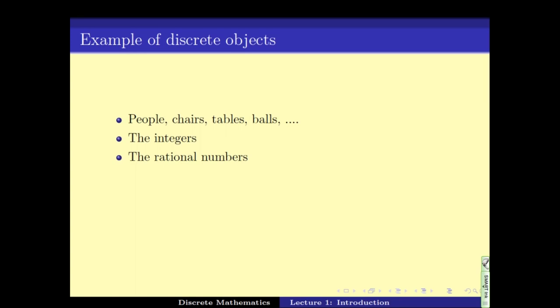The rational numbers, numbers like 2 by 3, 11 by 49, 23 by 108, they are also countable objects. They can be written as a fraction of two integers. So they are also discrete objects. Any finite set is a discrete object. Functions from the set 1 to n to 0, 1 is a discrete object. Even the function of the form y equals x squared, where both x and y are from the natural numbers are discrete objects. So this gives us some understanding of what discrete objects are.